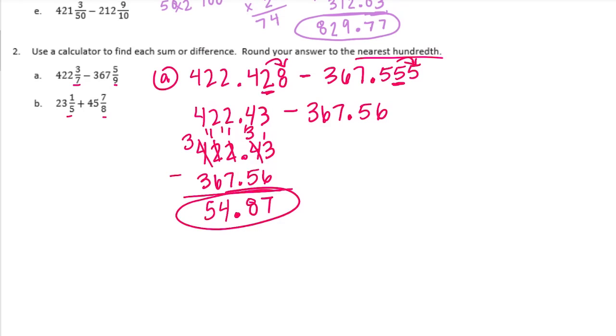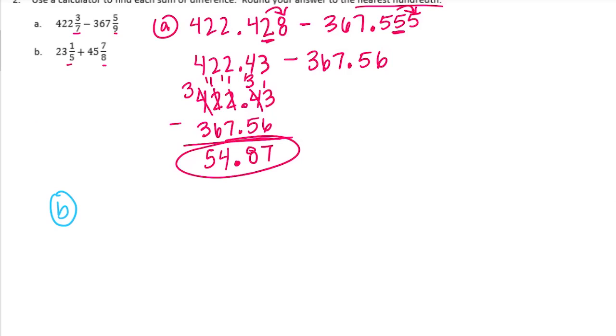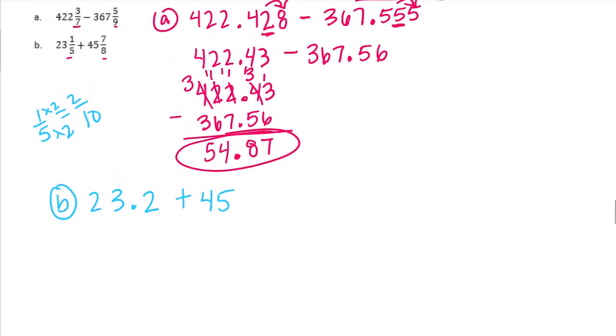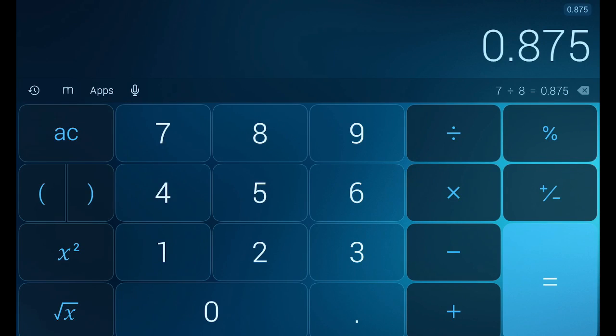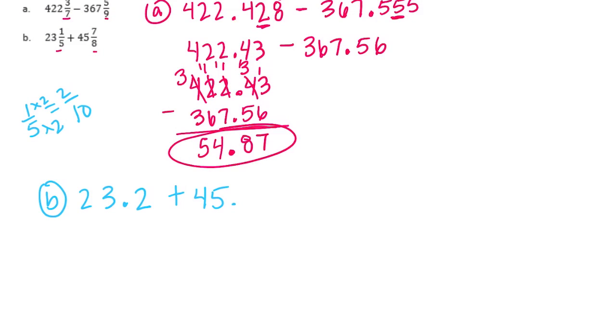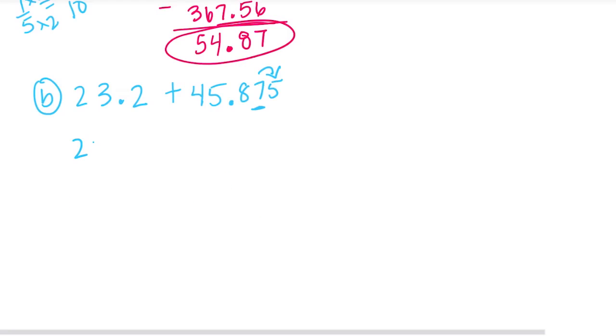And B. So 23 and 1 fifth. 1 fifth I can actually make into tenths. It's 2 tenths. So I'm going to change that to 23 and 2 tenths. Don't need to use the calculator. Plus 45, and I do need to do it for 7 eighths. 7 divided by 8 is equal to 875 thousandths. I need to round this to the nearest hundredths place. So we have 23 and I'm going to make it 20 hundredths plus 45 and 88 hundredths. The 5 is 5 or higher, so the 7 turns into an 8. We add them.